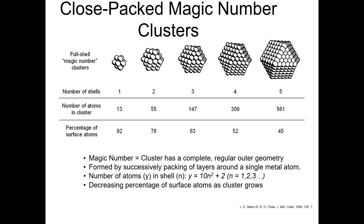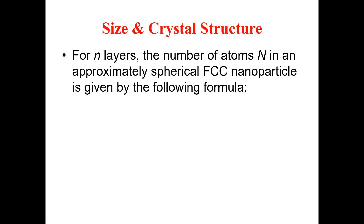An important fact: the percentage of surface atoms decreases as the cluster grows. The more the cluster grows, the fewer atoms are found at the surface. For n layers in an approximately spherical FCC nanoparticle, the total number of atoms N is given by a generalized formula.